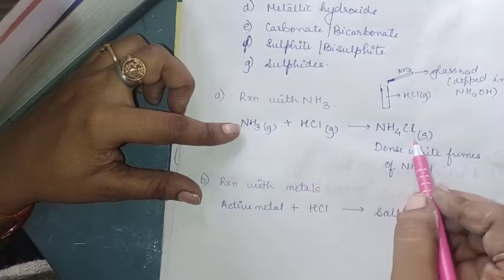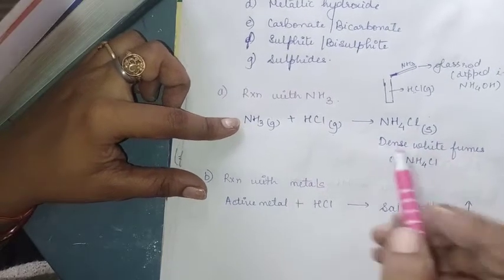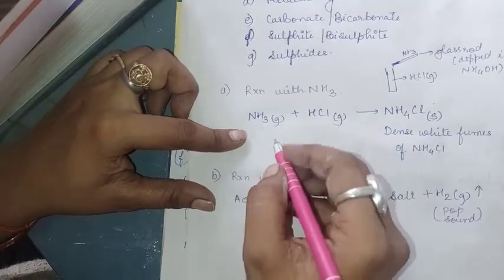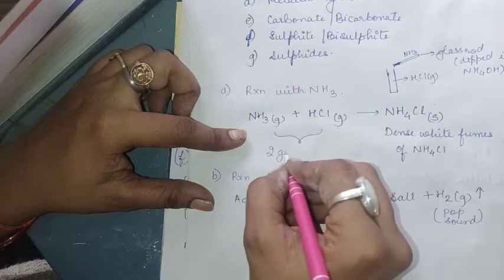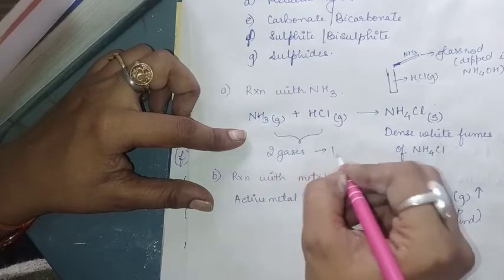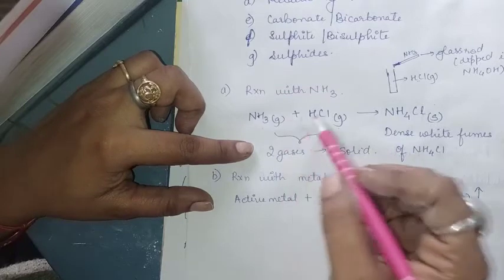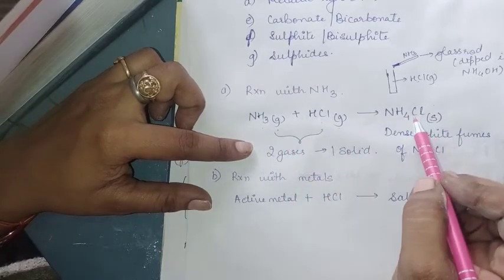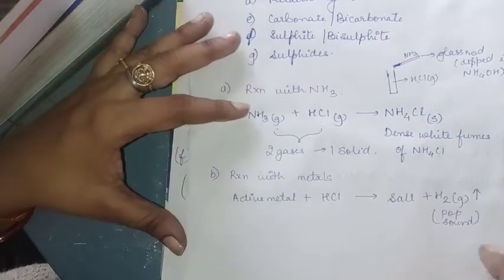Ammonia gas reacts with HCl gas to give ammonium chloride. There are dense white fumes of ammonium chloride which are seen. The key observation here is that two gases give one solid — ammonia gas and HCl gas react to give solid ammonium chloride.